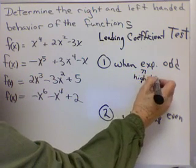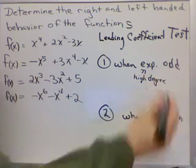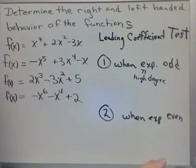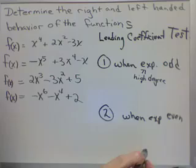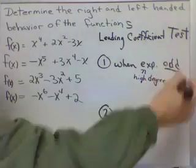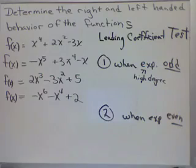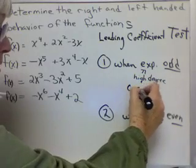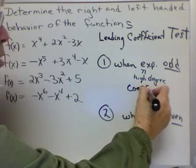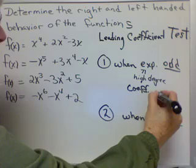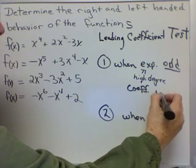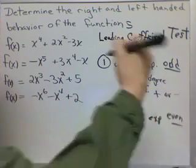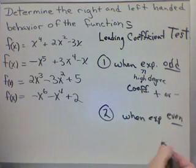So, you look at the highest degree exponent. And then, you determine whether it's odd or even. And once you determine whether it's odd or even, then you have to look at the coefficient. And is the coefficient positive or negative? So, two things you have to look at.